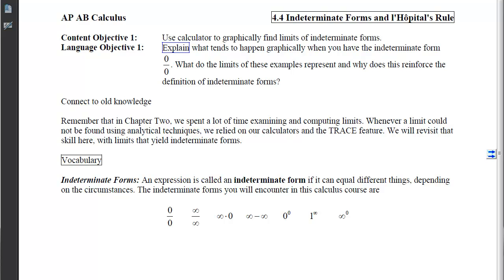When we're done, I want you to be able to explain what tends to happen graphically when you have the indeterminate form 0 over 0, what the limits of these examples represent, and why this reinforces the definition of indeterminate forms.